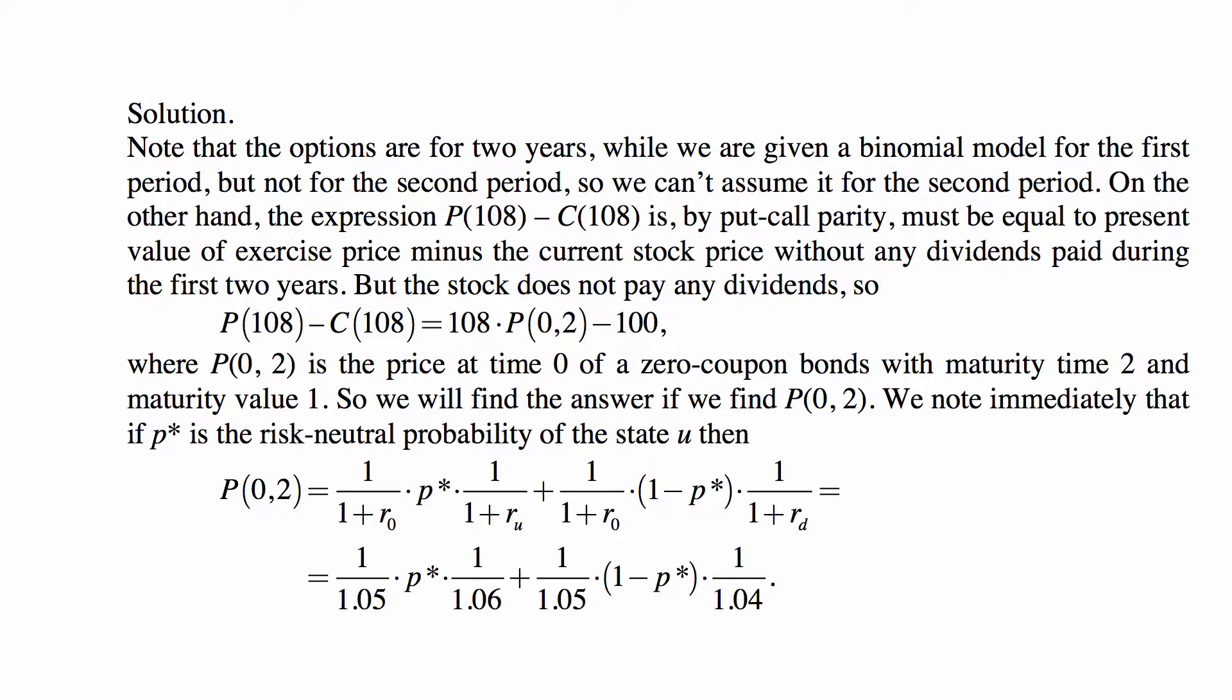So we must have this difference equal to present value of exercise price, which is 108, and then it's multiplied by a price of a zero coupon bond maturing in two years at the risk-free rates, and it's a one dollar zero coupon bond, then that's the present value minus 100 the current stock price. So we need to find the price of that zero coupon bond.